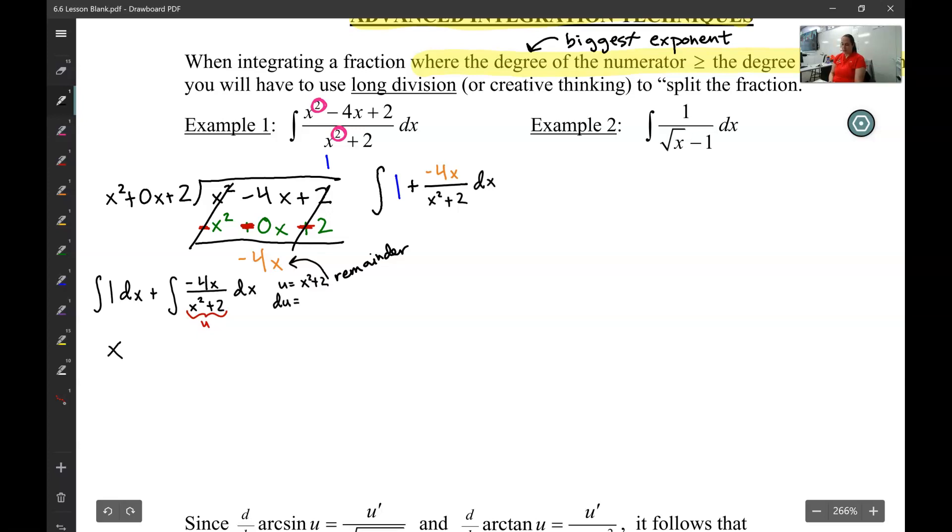Well, I know it's a u substitution because if I take the derivative of that bottom just in my head, I know that the derivative of this is going to be 2x, and I can make this look like a 2x. If you take the derivative of the bottom and you can make the top look like that derivative, that's a u substitution. So that's what we're going to do.